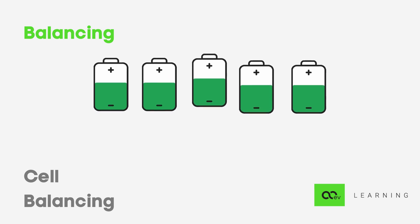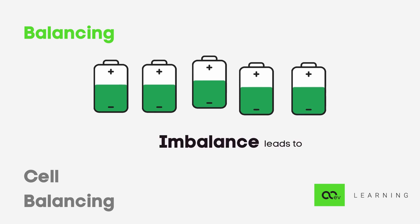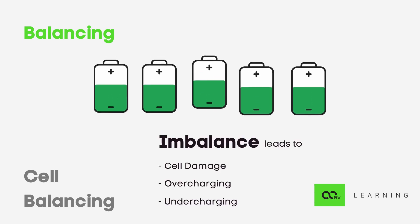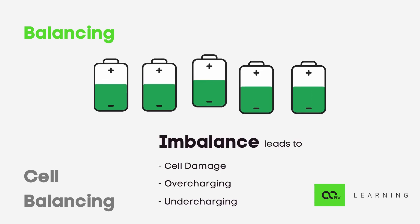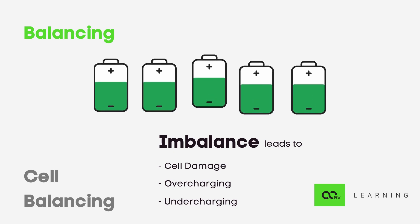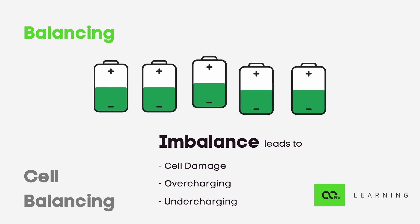Thus, battery packs naturally evolve towards an imbalanced condition. This imbalanced state may lead to damage. Overcharging and undercharging lead to degradation of cell life and ultimately getting damaged beyond repair. This raises the need for cell balancing.